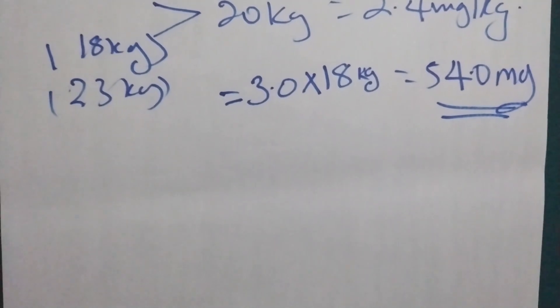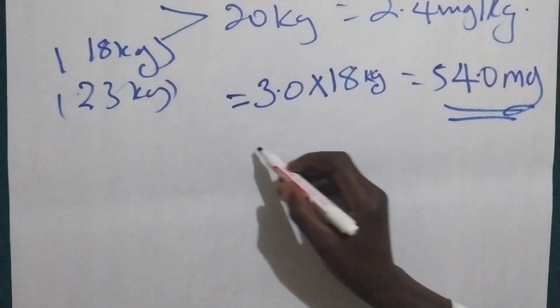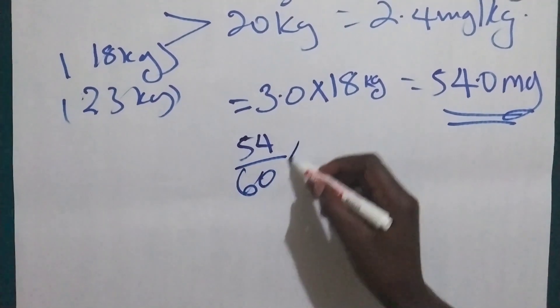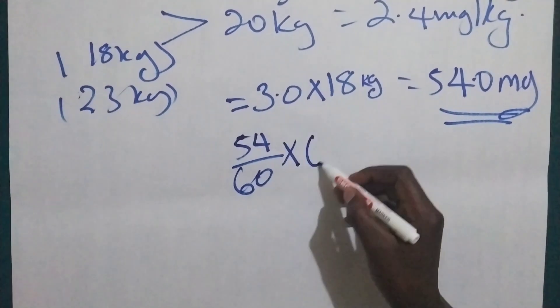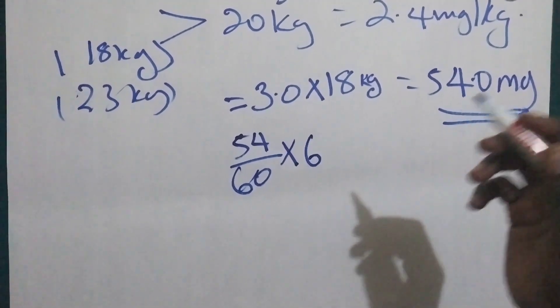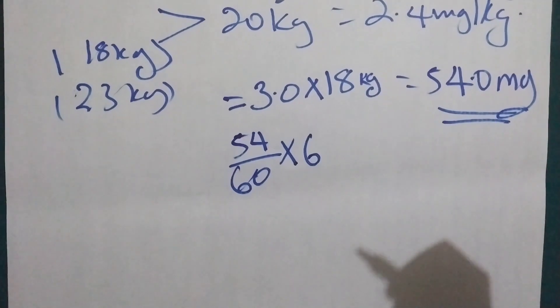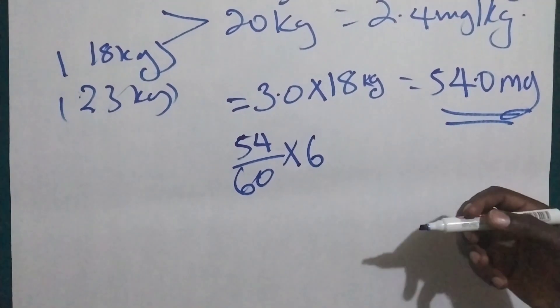So what we are going to do, we are going to put 54 divided by 60 times 6, because the sodium bicarbonate is one and then sodium chloride is 5. So if you add them it will bring to 6.